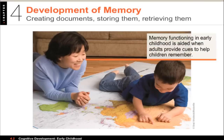Several things can help children develop memory: what the child is asked to remember — they find it easier to remember events that follow a fixed and logical order; how interested the child is — they show better recognition for toys that pique their interest; whether retrieval cues or reminders are available; and what measure of memory is used — verbal reports may not be as indicative as a performance or physical demonstration. Children can also be taught strategies like rehearsal and organization to improve their memories, just like adults.